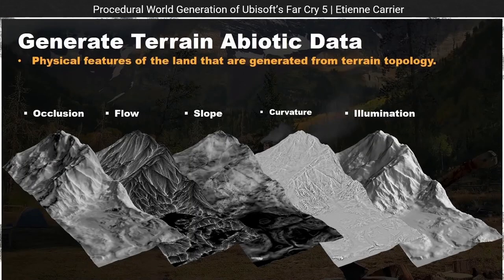Looking at a slide from that presentation, you can see they calculate interesting data from the terrain — similar to Substance Painter where you'd calculate curvature or certain masks. Here they generate masks that define where certain effects need to happen — defining where trees can be or where rocks can be.